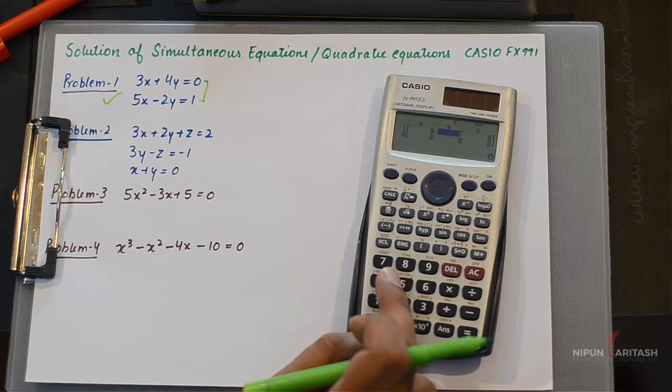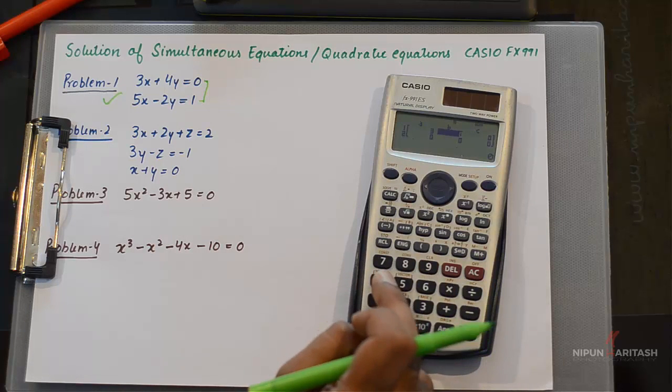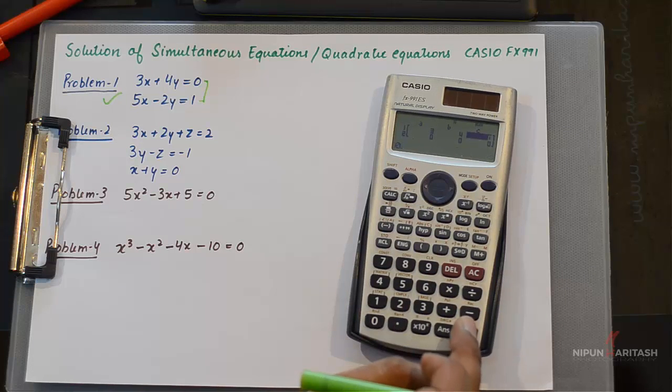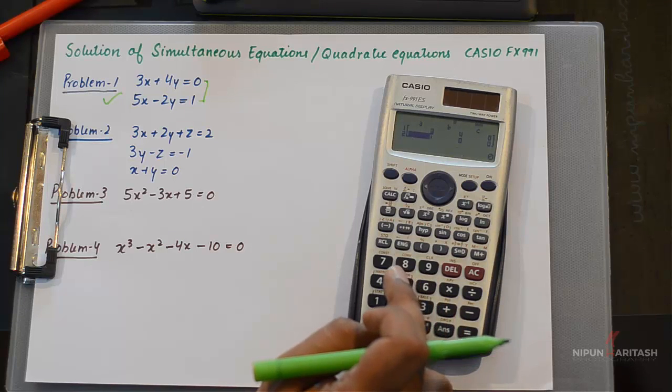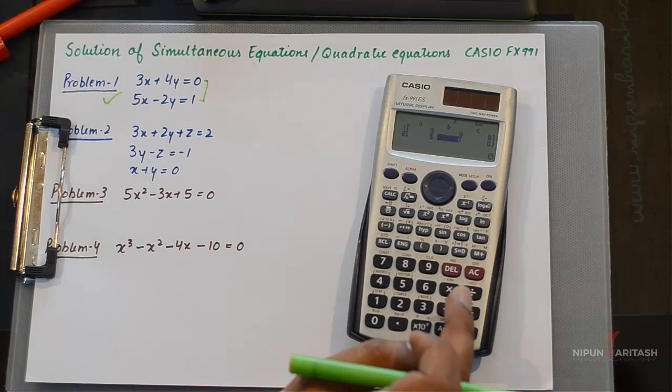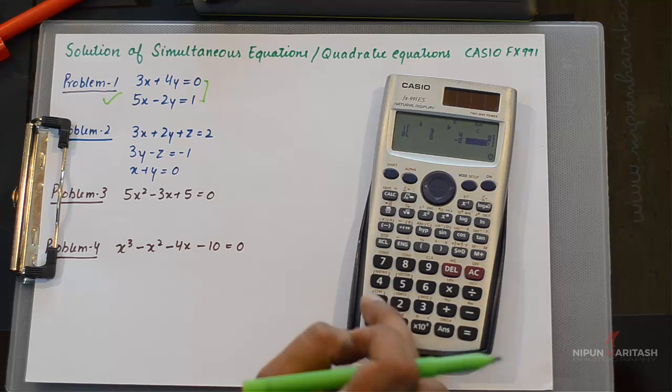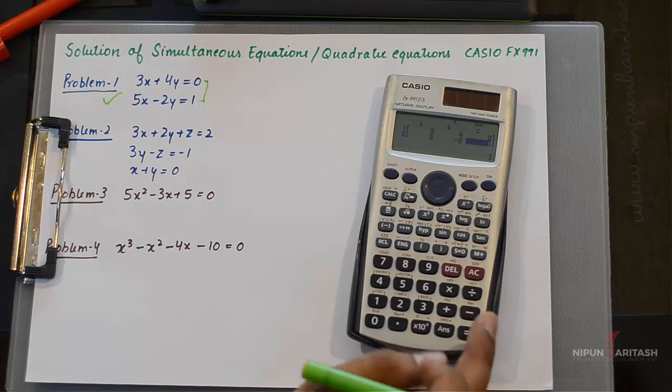It asks you to enter the coefficient of Y, which is 4 here, and then the constant is 0. Then for the next equation, the coefficient of X is 5, the coefficient of Y is -2, and the constant is 1. Once you have entered all the values, you need to press equal.